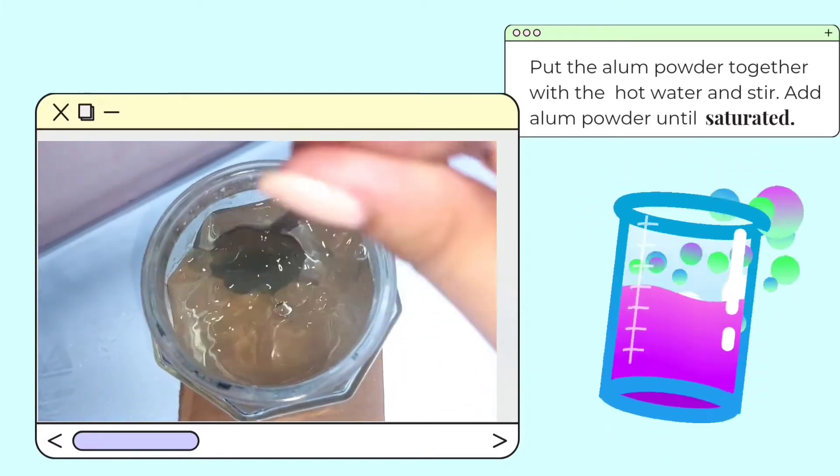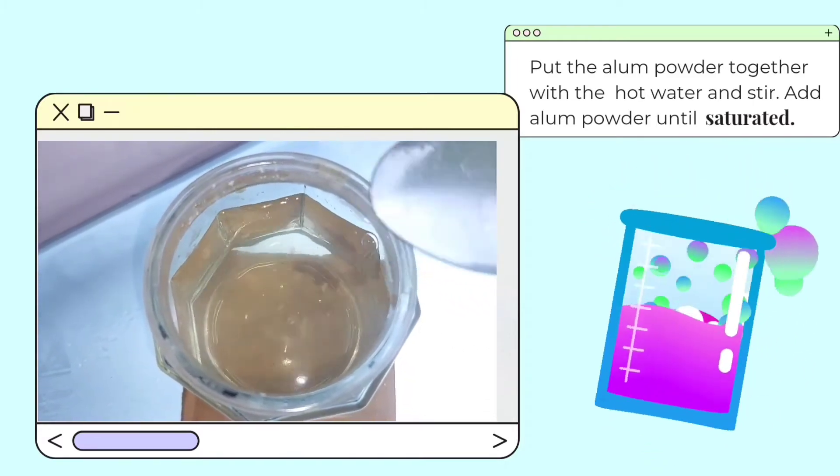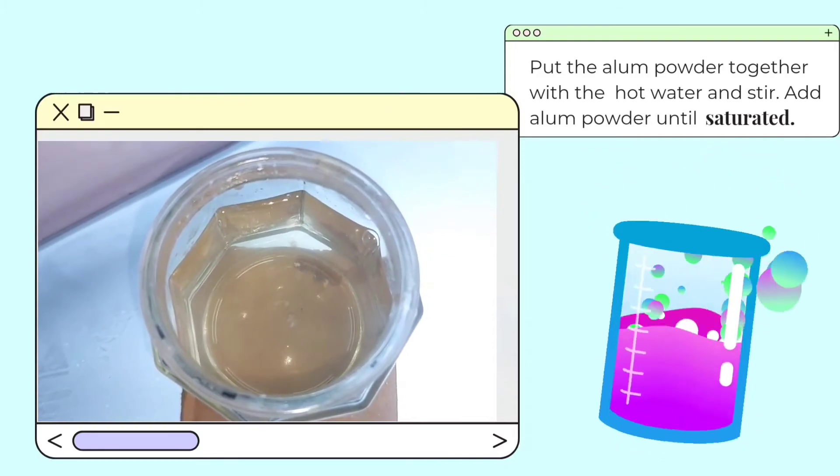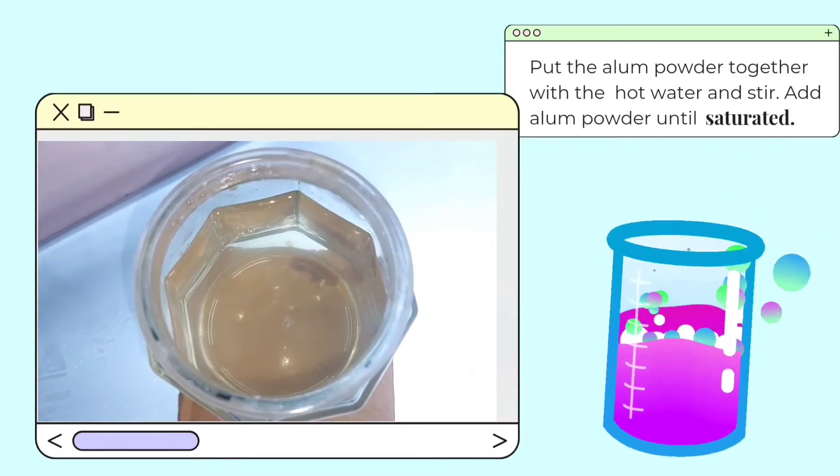Keep adding alum and stirring until the alum no longer dissolves. You may see a small amount of alum powder at the bottom of the jar.